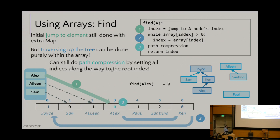We can also do path compression in the array: we keep track of all indices we've traveled through during a find, and then go back and replace the elements at all those indices with the new overall root index. Very elegant.